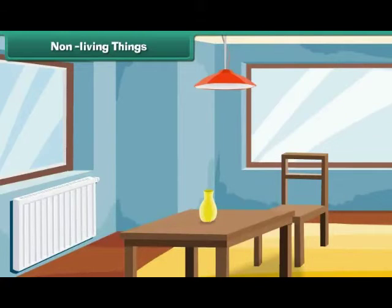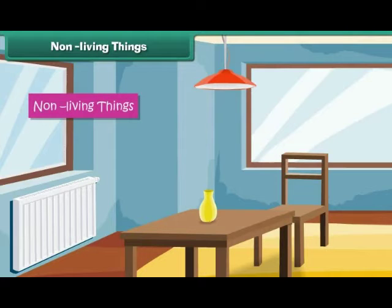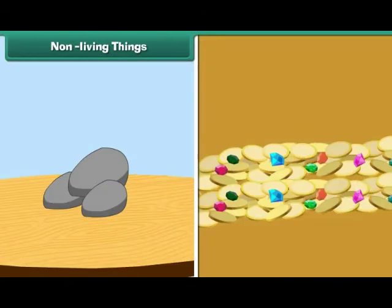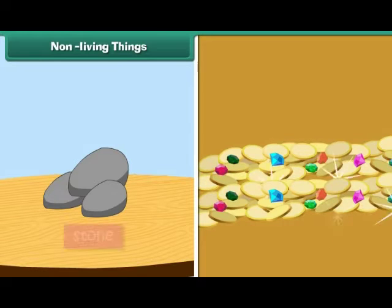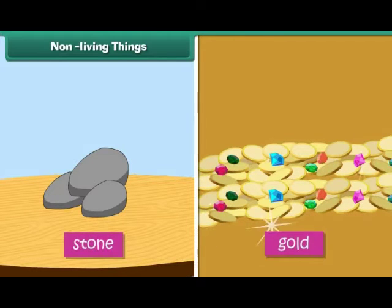Non-living things do not breathe, grow, or reproduce. They do not have sensation. Some non-living things are natural, for example, stone, gold, etc.